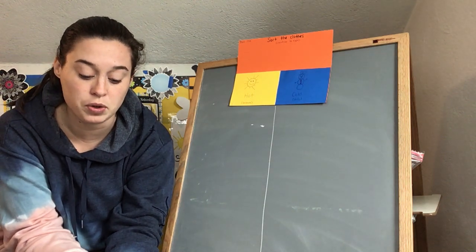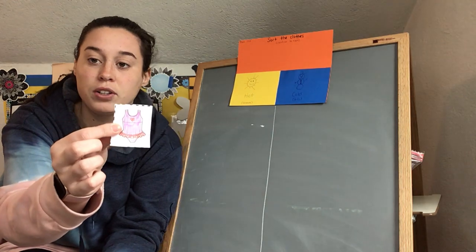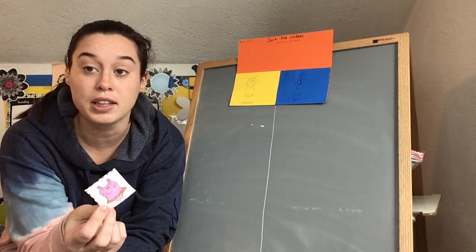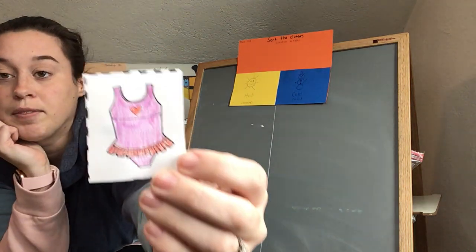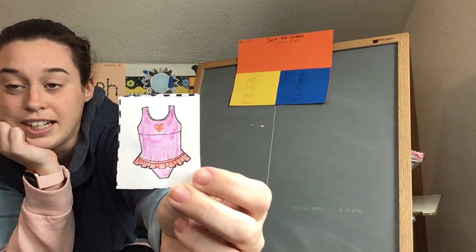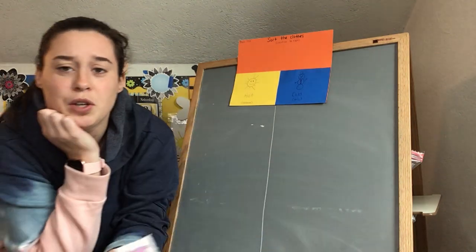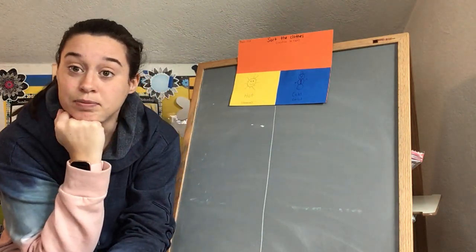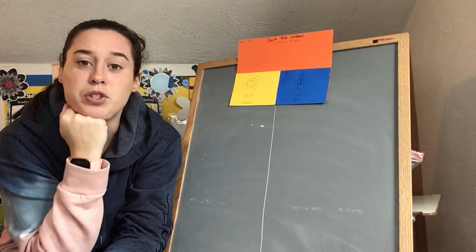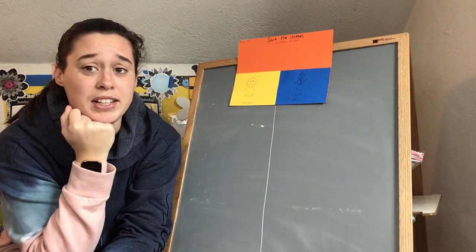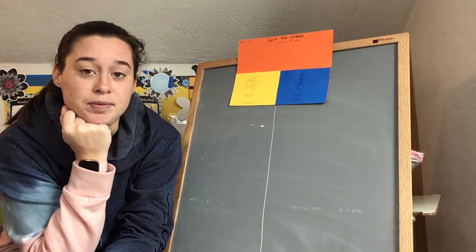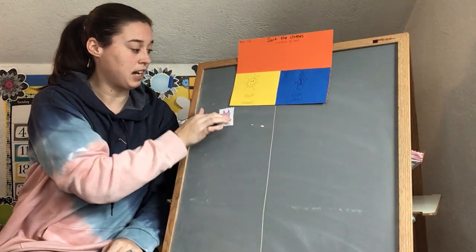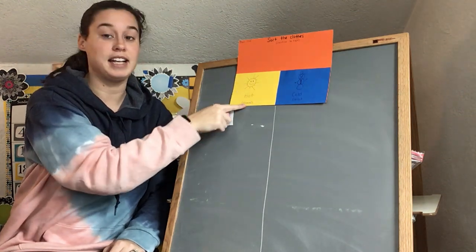So we're going to start with all our clothing and we're going to take one at a time and we're going to sort them. So our first one is a bathing suit. So would you wear this now, like in the winter when there's snow on the ground or would you wear it in the summertime where it's nice and hot? Yeah, that would go in the hot side. Okay, so it's going to go on our yellow side because this is hot.